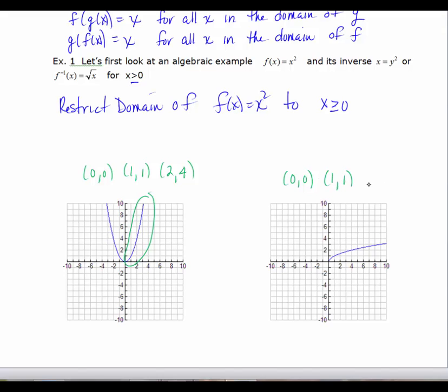Now the first two ordered pairs are the same, but we'd have 4, 2. You know, if we had 3 squared, which is 9, then we would have the square root of 9, which is 3. So a function and its inverse are also symmetric across the line y equals x.